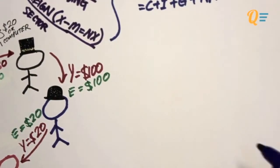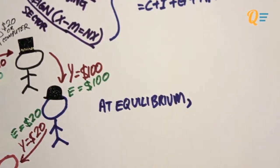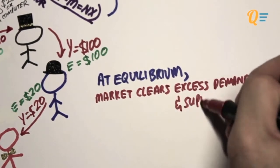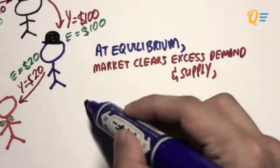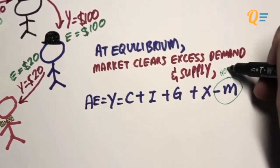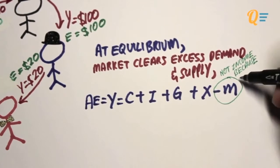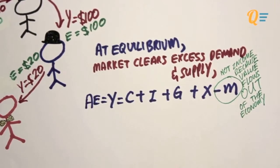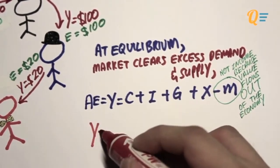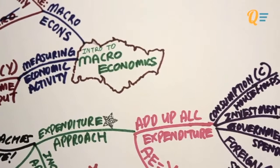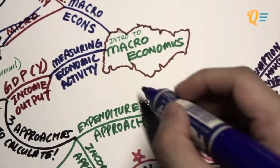That's how you use the expenditure approach to calculate income. At equilibrium — meaning the market clears of excess demand and excess supply — aggregate expenditure equals income, which equals C plus I plus G plus X minus M. Imports reduce your level of income because this is value flowing out of the economy. When you buy something overseas, you're giving money to an external person and that money doesn't come back to your economy.